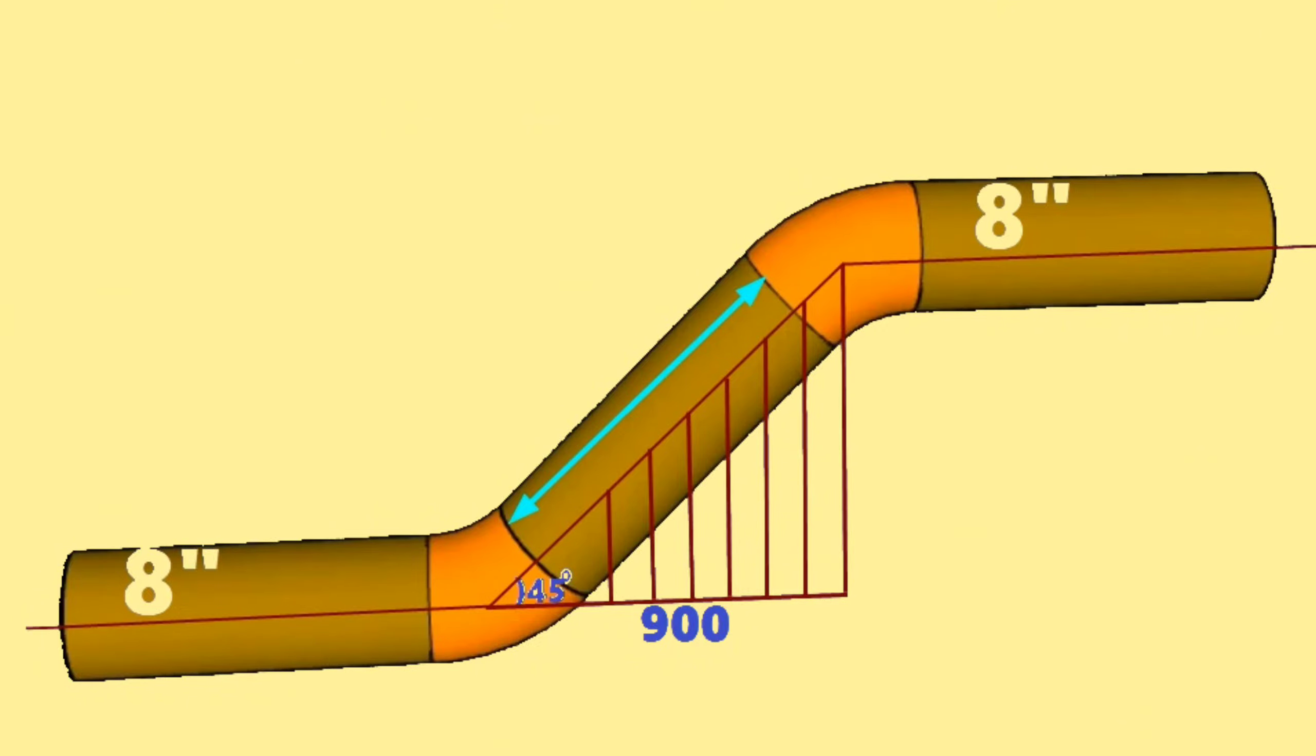For this, we must first find the distance between the centers of the 45-degree butt weld elbows. Then, if we subtract the lengths of the elbows from this distance, we can find the length of the pipe piece. To find the distance between the centers, we will use this right triangle formed by dashed lines.